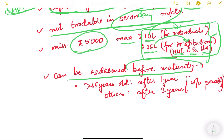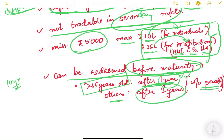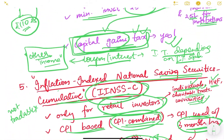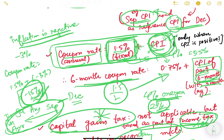IINSS-C bonds can be redeemed before maturity. For senior citizens (65 years or older), redemption is allowed after one year without any penalty. For other investors, redemption after three years is allowed without penalty, but redeeming before three years incurs a penalty. This concludes our discussion of the different types of government bonds, and we will continue in the next video.